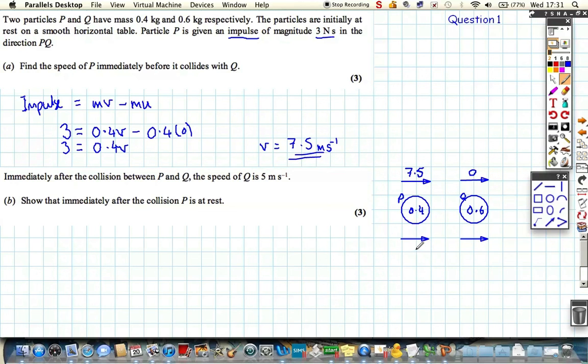Afterwards, we need to show that the speed of P is 0, so let's just assume it's at a velocity of V, and we're told that Q gets a speed of 5 after the collision.